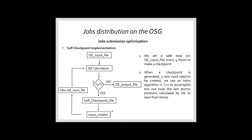So for us, the implementation of the self-checkpoint is as follows. We have the Quantum Espresso input file, and we can set a safe stop in the input file of Quantum Espresso. We set it every four hours. We start the calculation and if the calculation ends before the four hours, the job is done and the job goes out.